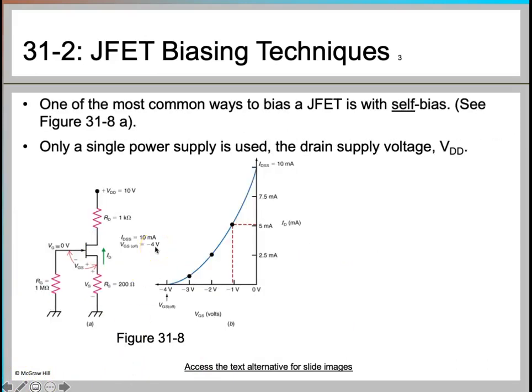The next biasing technique is self-bias, another common type for JFET. In this technique, we use a single power supply — the drain supply voltage VDD. The gate voltage and source voltage are both grounded, and there are three resistances: RD is the drain resistance, RG is the gate resistance, and RS is the source resistance.